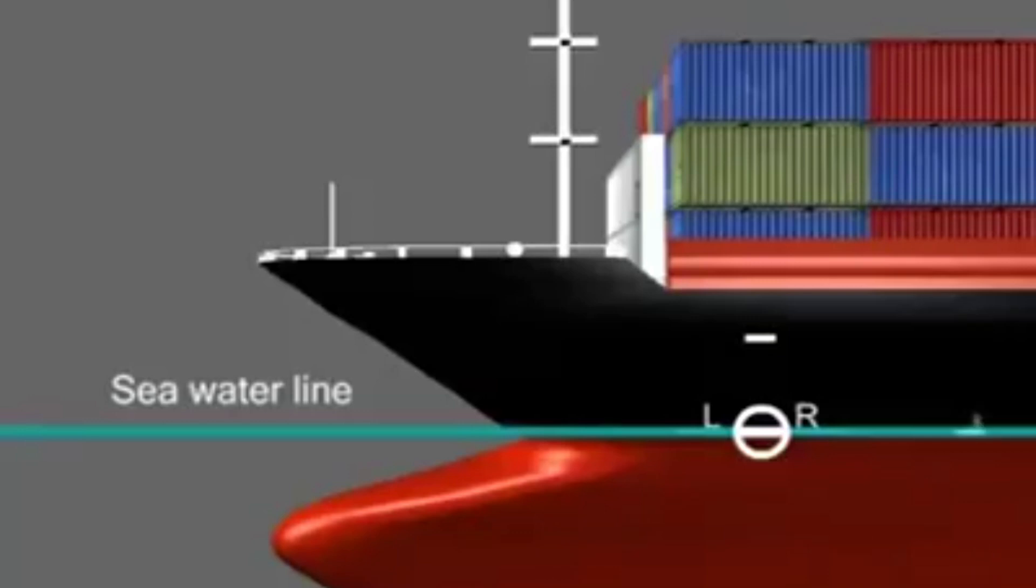The summer load line is the primary mark. It is from this line that all other lines or marks are derived. The winter load line is 1.48 of the summer load draft, placed above the summer line.